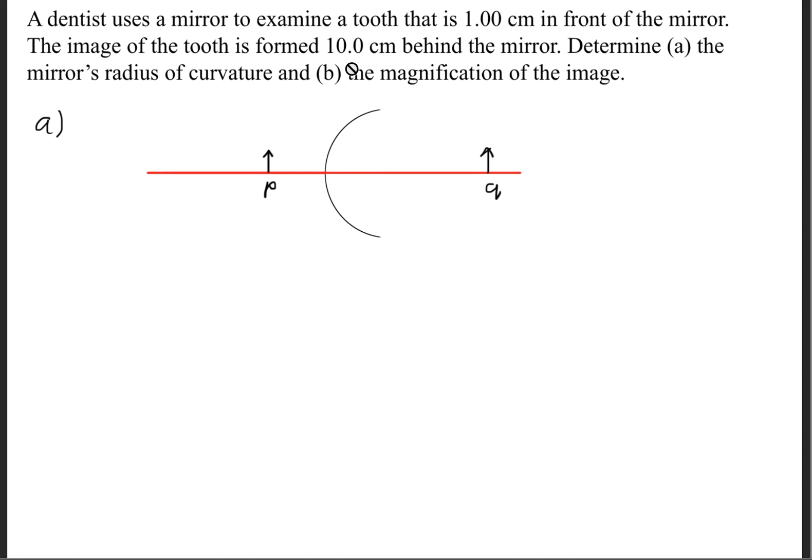And the image of the tooth is formed 10 cm behind the mirror, so Q is going to be on the right side of this mirror. So this is going to have a negative value, so this is going to be negative 10 cm. And this is because the image is a virtual image, because it's formed behind the mirror.